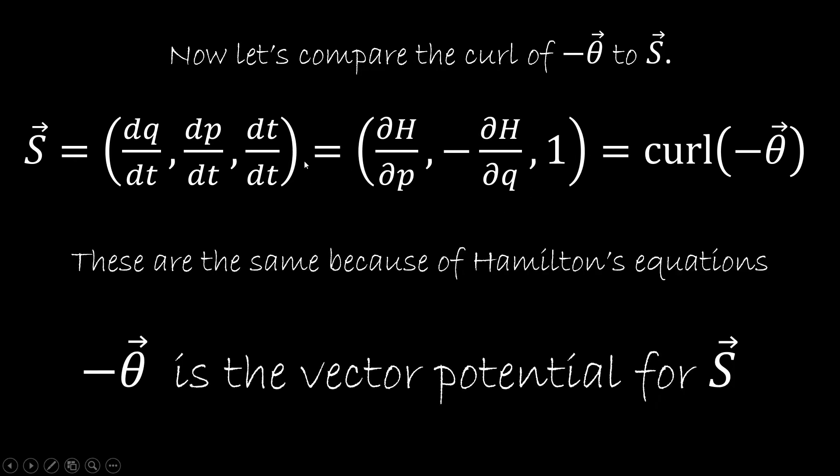So what happens is that S and the curl of minus theta are actually equal because of Hamilton's equation. So saying that S is equal to the curl of minus theta is stating Hamilton's equation. So minus theta is the vector potential for S. It's a vector field whose curl is S.